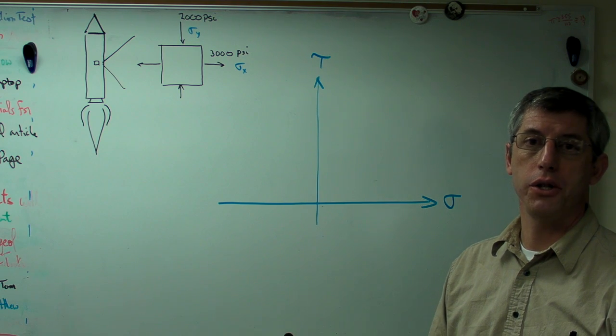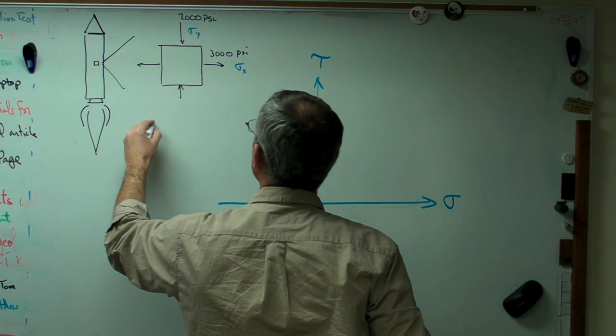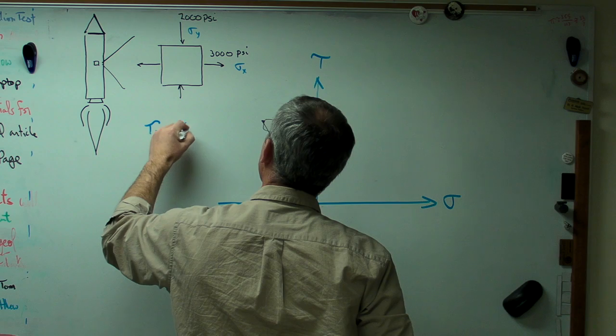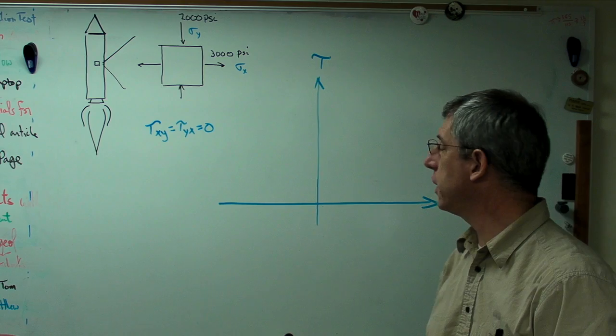So tau xy and tau yx are both zero. Now, that's not generally true, but in this case, it is.